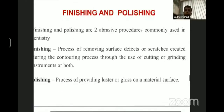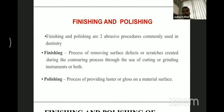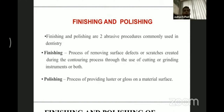The next topic is finishing and polishing of restorations in conservative dentistry. Finishing is a process of removing surface defects and scratches created during the contouring process through the use of cutting or grinding instruments. Whenever you are doing a restoration and contouring it during the initial setting time, whatever application method you use, there are going to be some surface irregularities or surface defects in that material. Gross finishing can be done at the time of initial set or delayed setting.